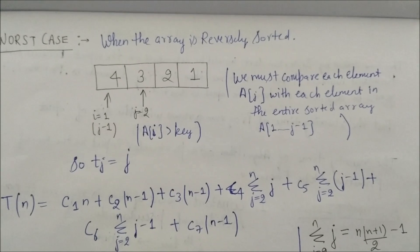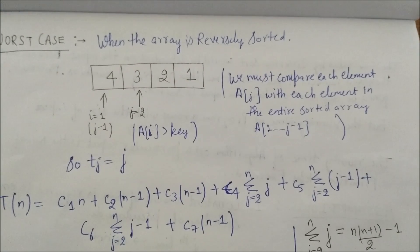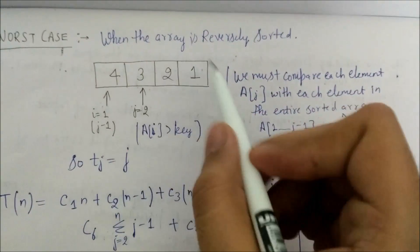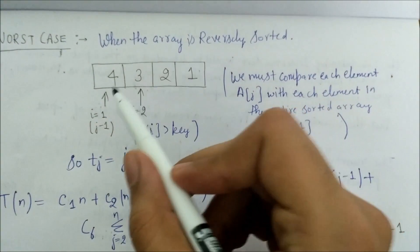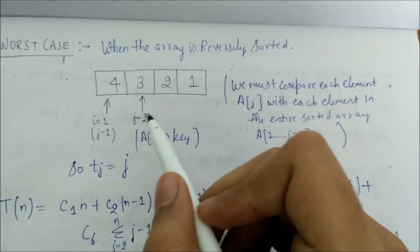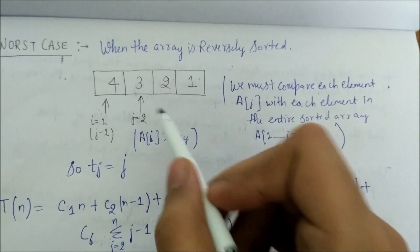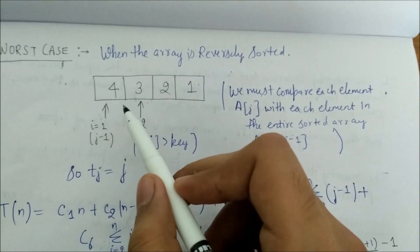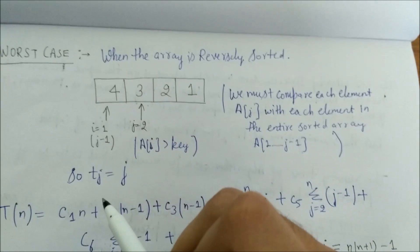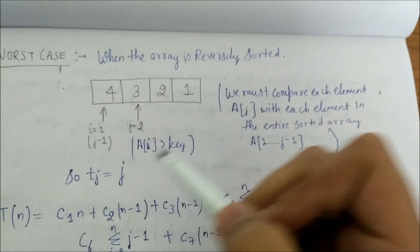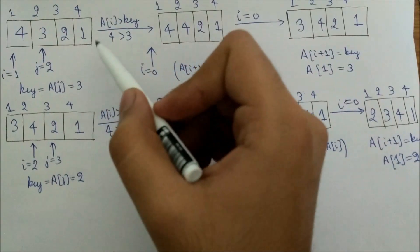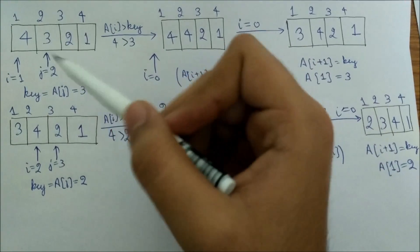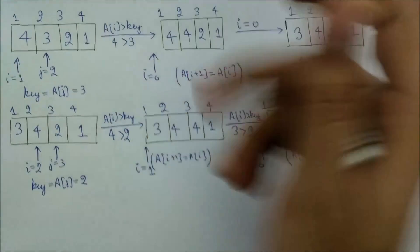The worst case occurs when the array is reversely sorted. In this case, for each j we must compare element a[j] with every element in the entire sorted subarray a[1] through a[j−1]. Let's see how this plays out.